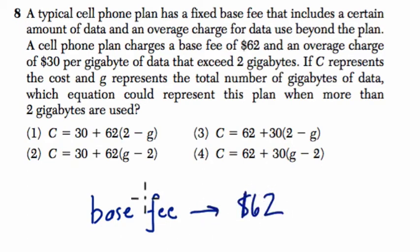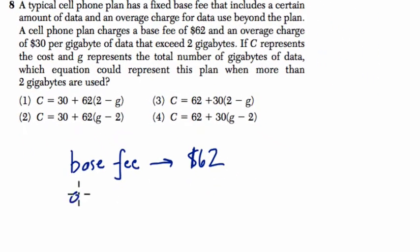And then we have an overage charge of $30 per gigabyte. Okay, oh boy, that's kind of steep, right? So the overage, if we go over a certain amount, we have to pay extra, so it's our slope here, our rate is $30 per gigabyte.